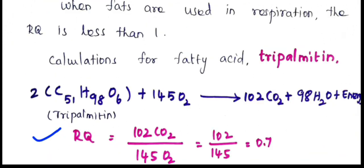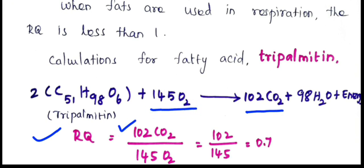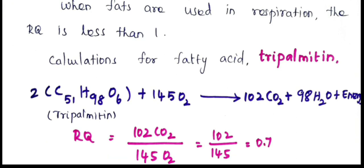RQ equals the volume of carbon dioxide evolved, which is 102 CO₂, divided by the volume of oxygen consumed, which is 145 O₂. So RQ equals 102 divided by 145, which equals 0.7.